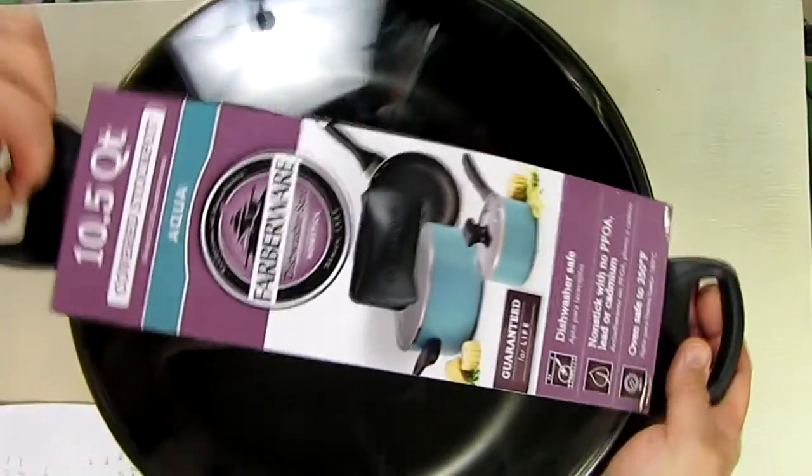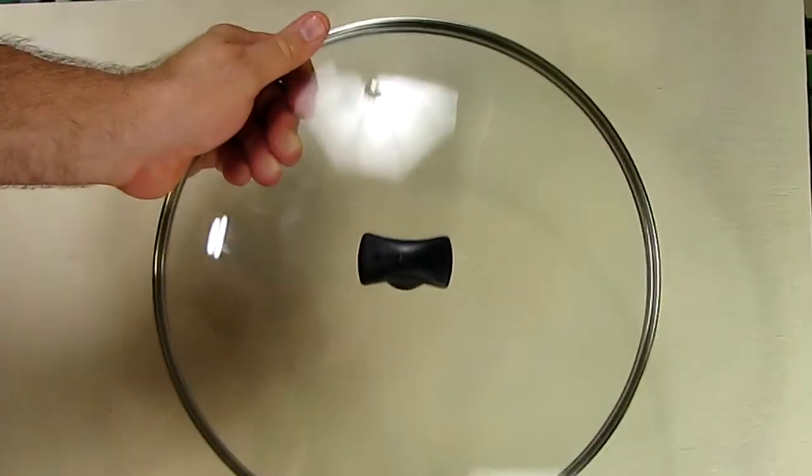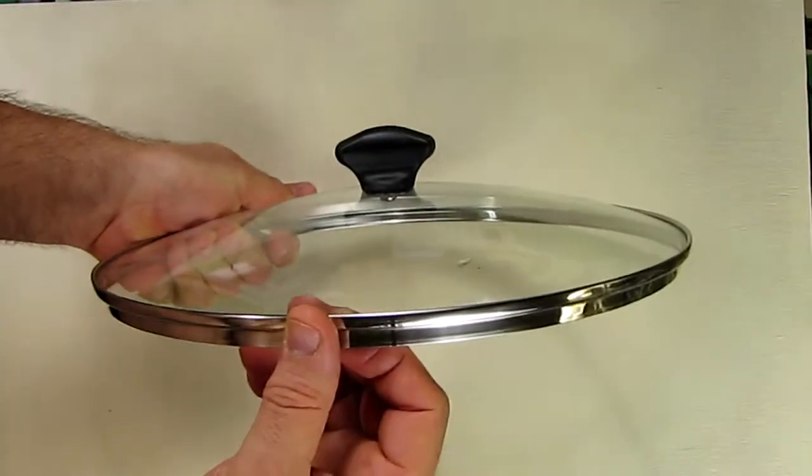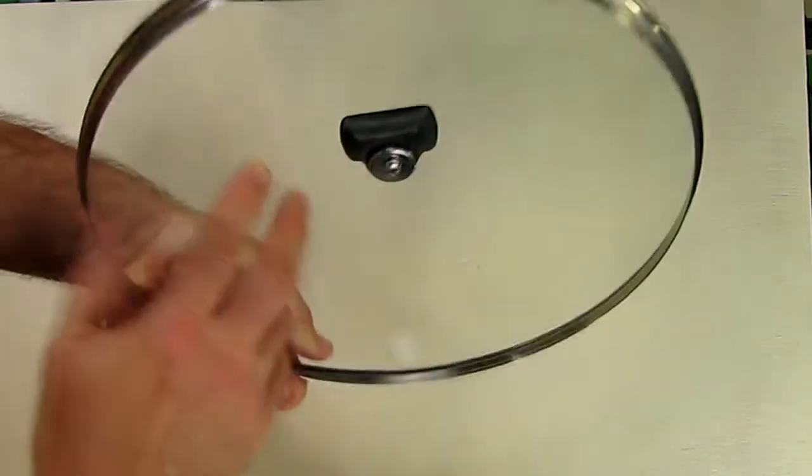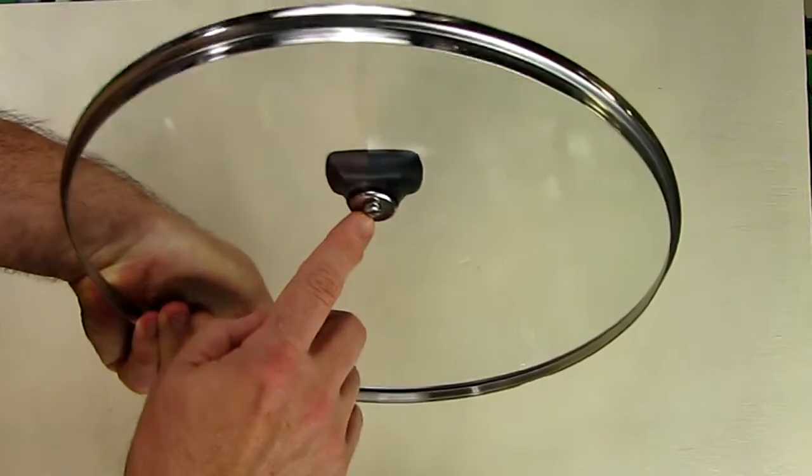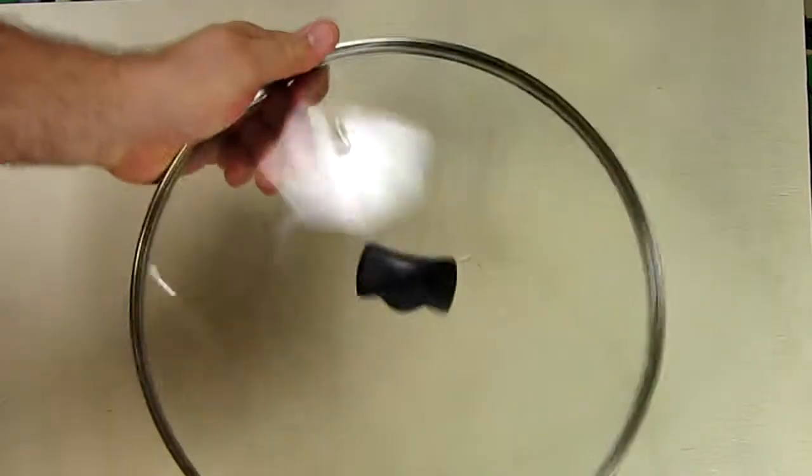So here's what the cover looks like. It has a nice handle that stays pretty cool to detach and a screw that you can tighten if you need to, and a nice stainless steel outer rim and a tempered glass top. Very nice.